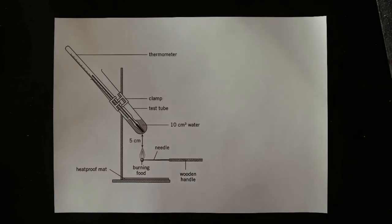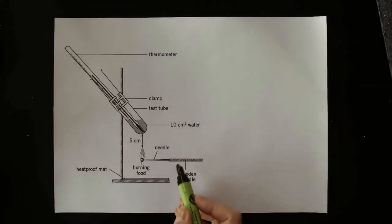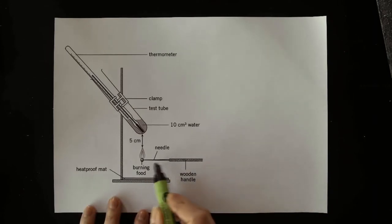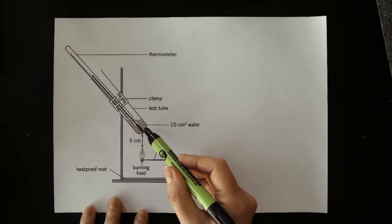This is a diagram of how I will carry out the investigation. So here I've got a needle on a wooden handle and I'm going to put the crisp on the needle and I'm going to light the crisp so it will be on fire. Above that is going to be a test tube of water.